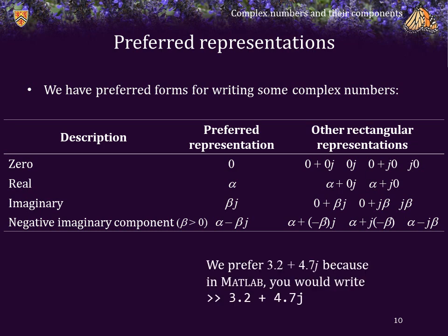The reason we put j after the imaginary component is because that's generally what you would write in MATLAB. So in MATLAB we would write 3.2 plus 4.7j as exactly that: 3.2 plus 4.7j.